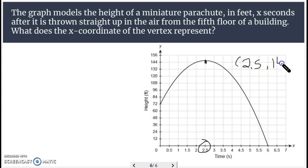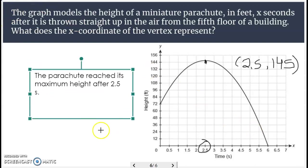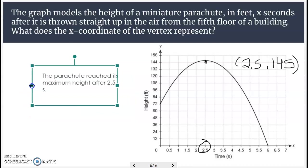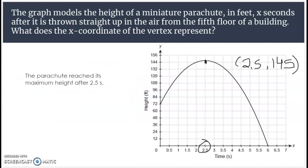And approximately 145. So the parachute reaches a max height, 145. All right. And then what does the x-coordinate mean? Well, that tells us when it occurs. The parachute reaches a max height after two and a half seconds. There we go.